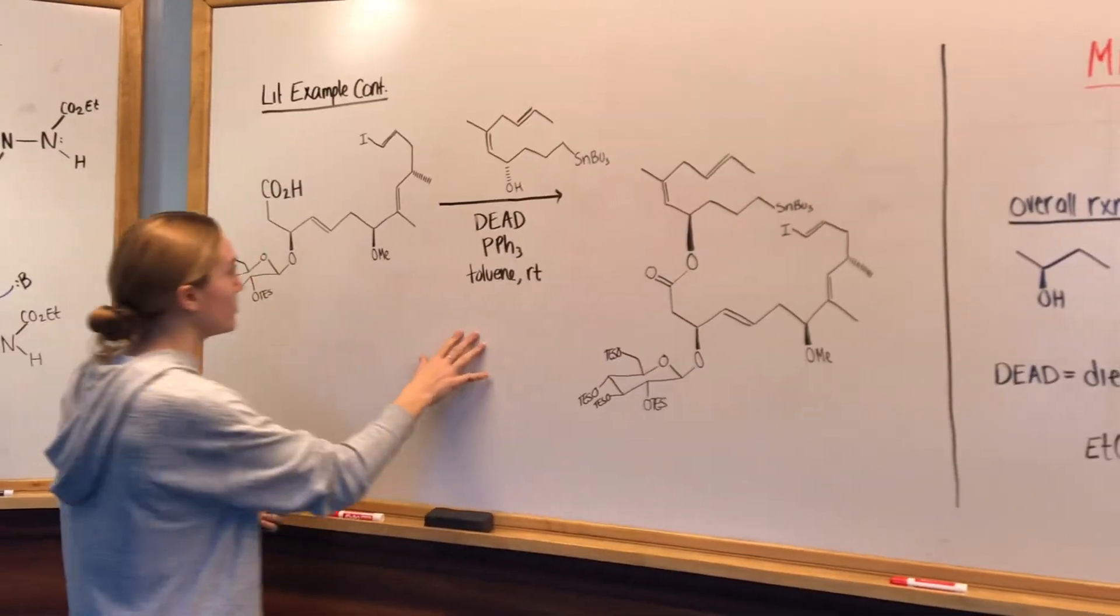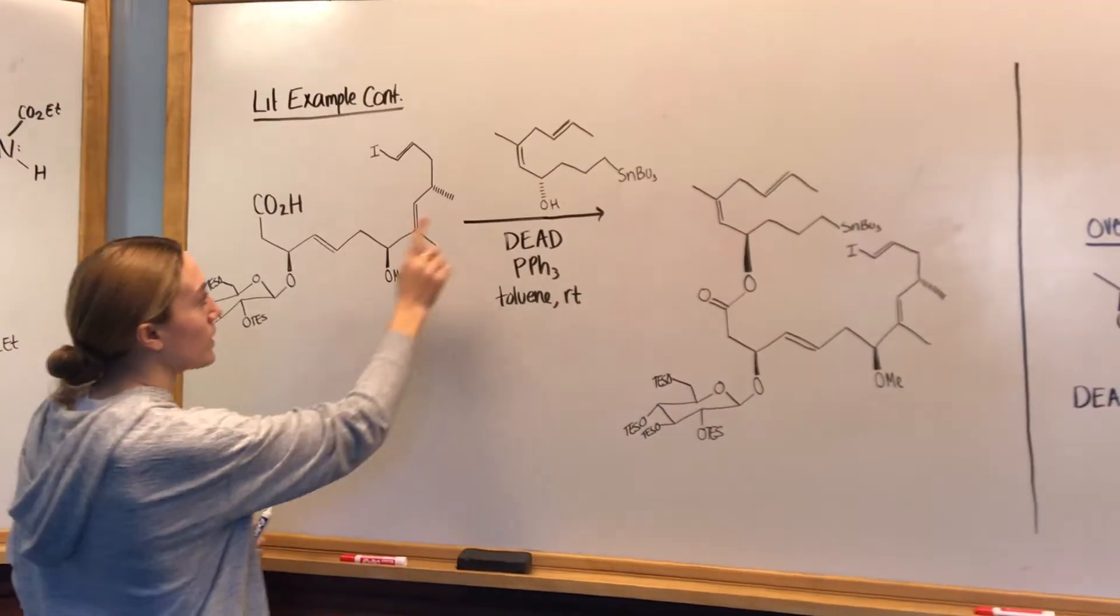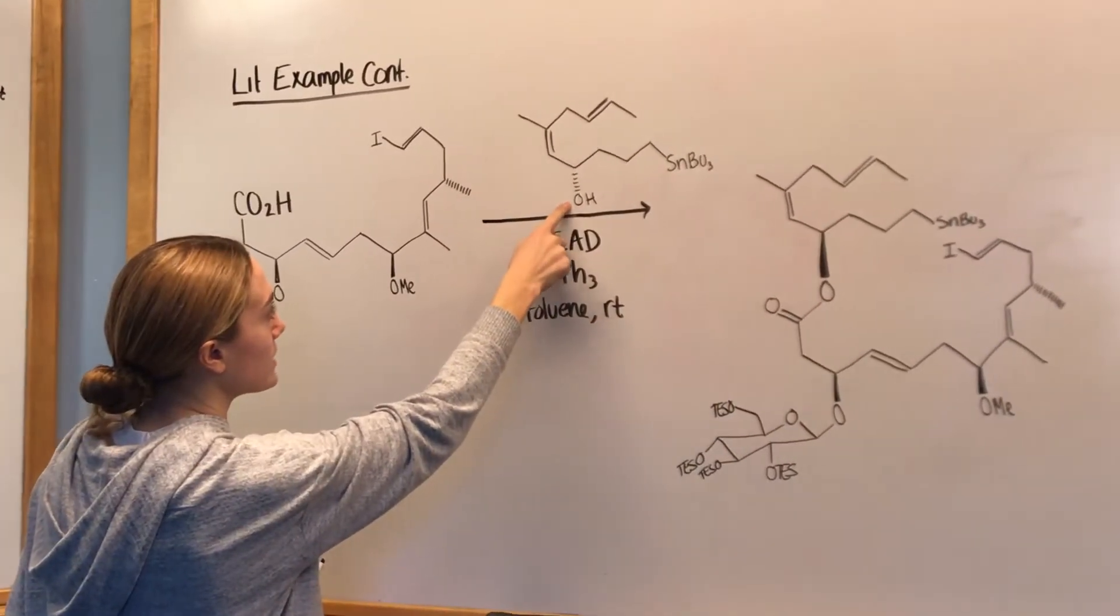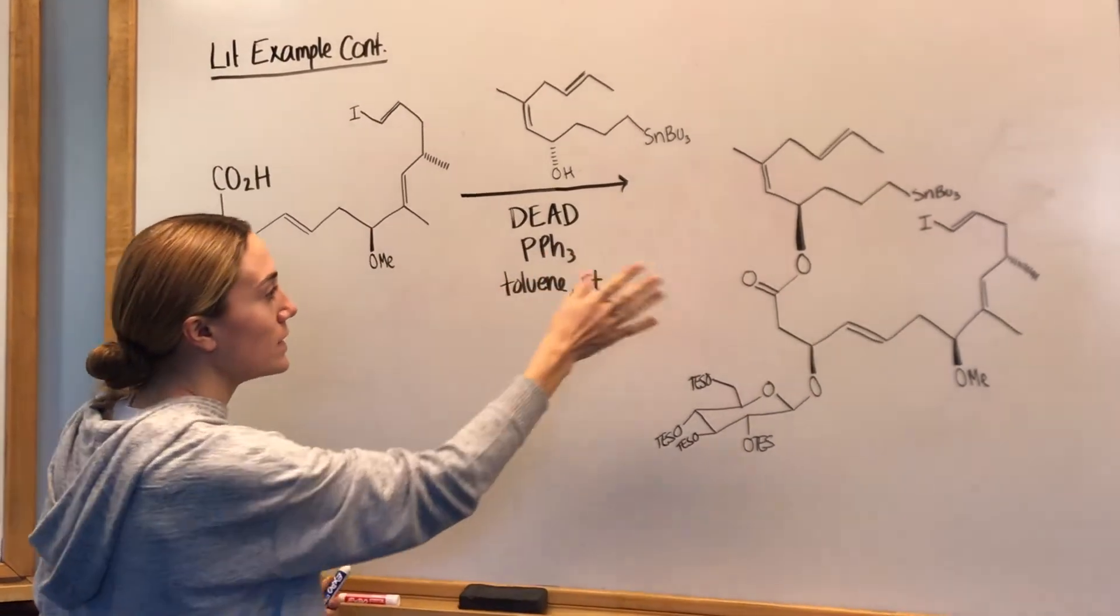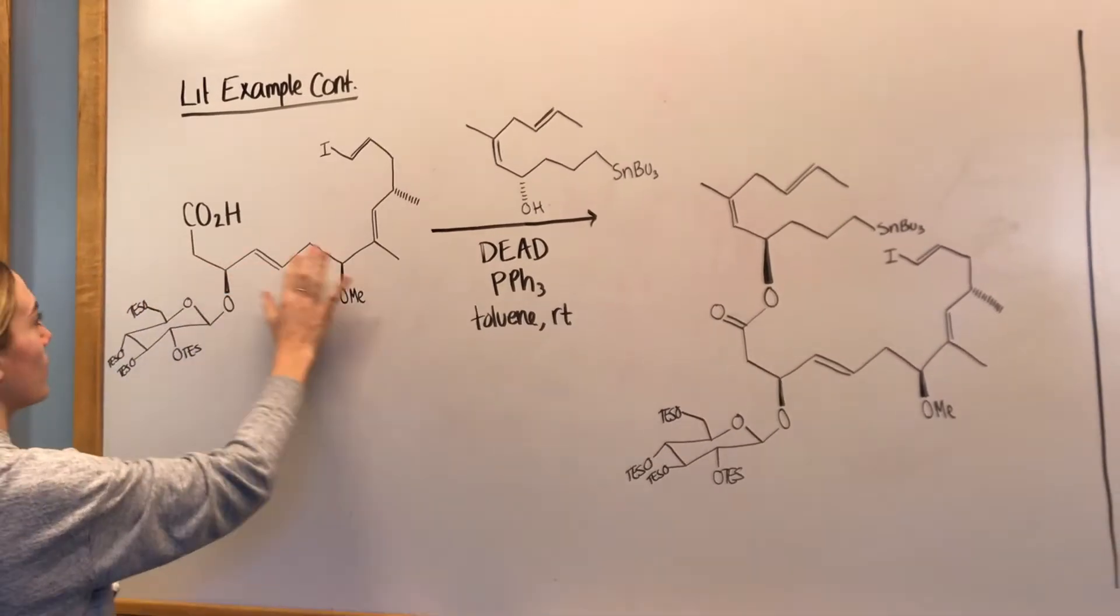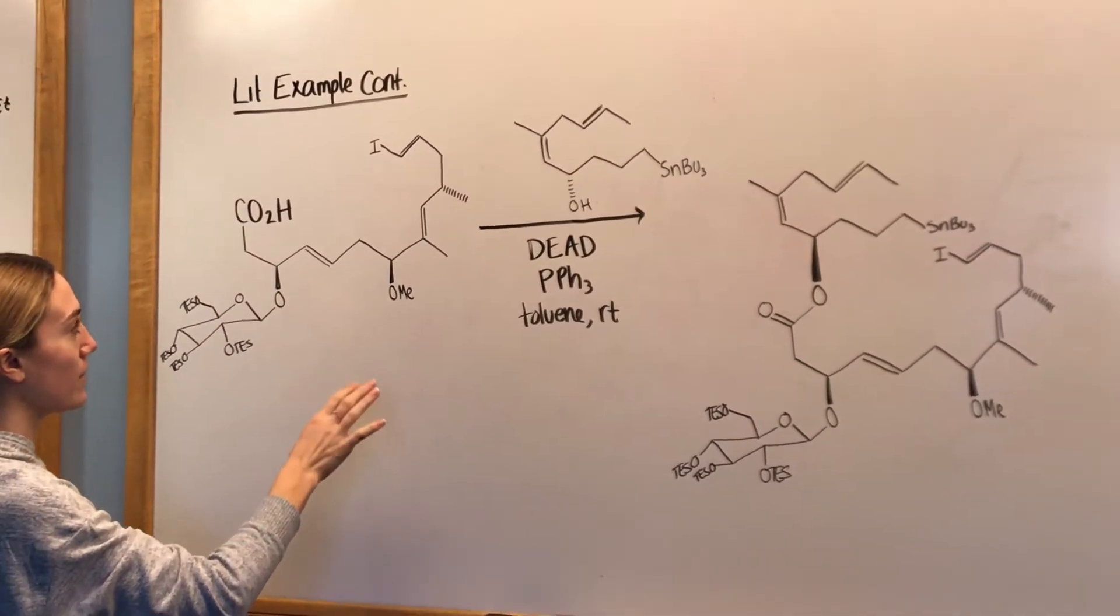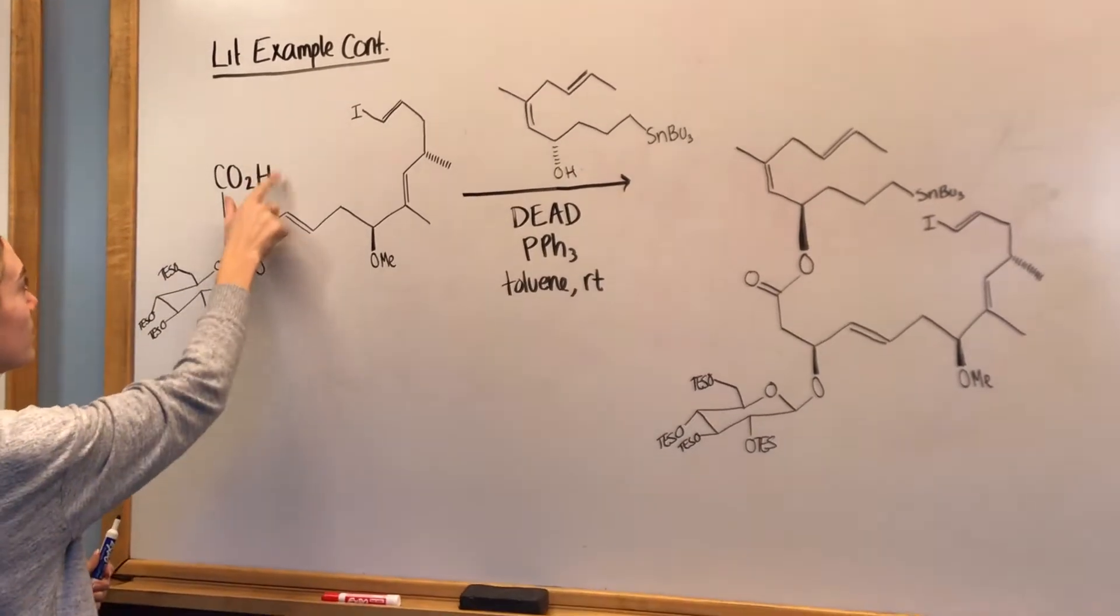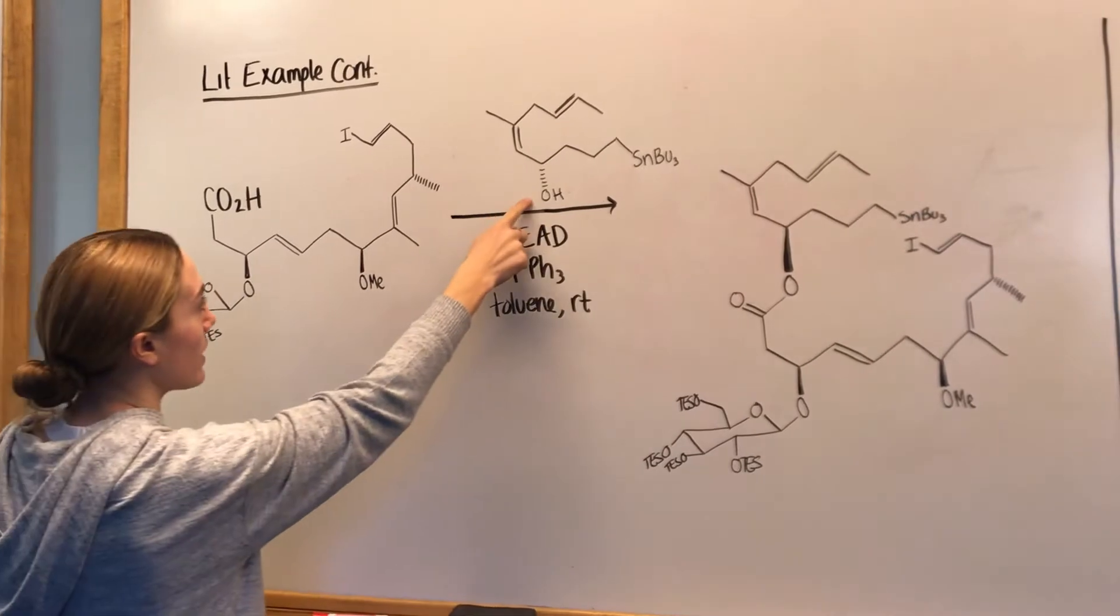Within that synthesis, there's a step that involves the Mitsunobu reaction, where it takes this molecule and this up here, which has this alcohol, and these two reagents that we used in the previous example to form this molecule. So up here, this whole part of the molecule is not really involved in the chemistry of this reaction. But here we have that carboxylic acid, which we saw in the basic example. And here we have that oxygen.